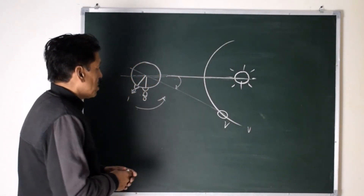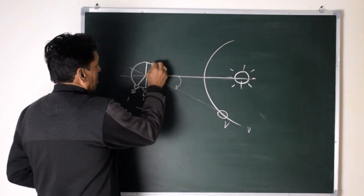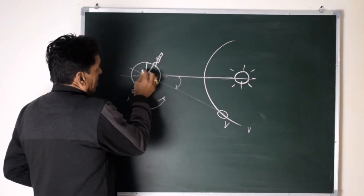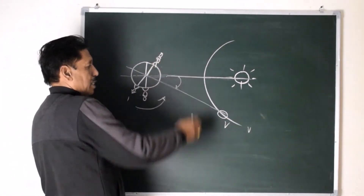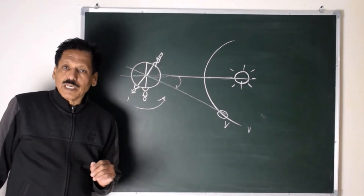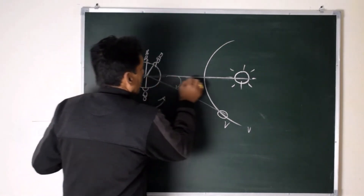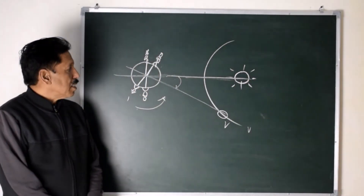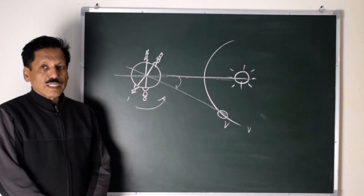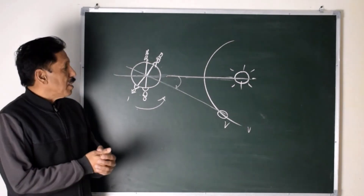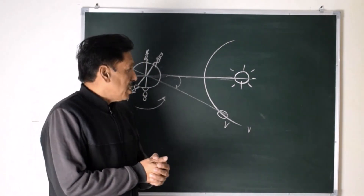Let us see what happens when the observer comes to position 3. The observer's rational horizon is passing through Venus and as you know Earth is spinning this way, so what is happening is Venus is setting. In position 4, the observer's rational horizon passes through the Sun and the Sun is setting. Venus has already set before the Sun, so in the evening, after sunset, Venus will not be visible. Venus cannot be seen in the evening.